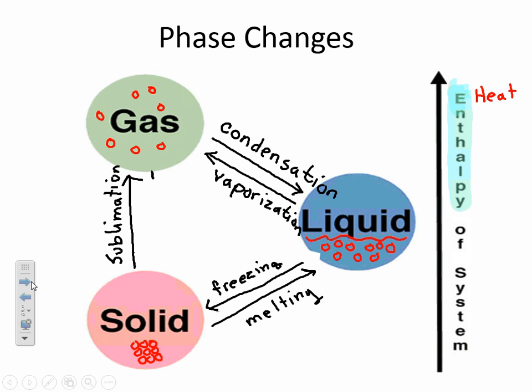If you have a gas going straight to a solid, that's called deposition. When we have frost on our cars, what happens is the water vapor in the air hits our windshield and goes straight to the solid phase — ice crystals — and we get frost. So that's called deposition.